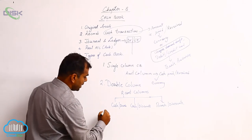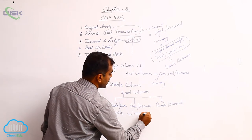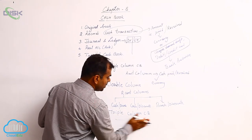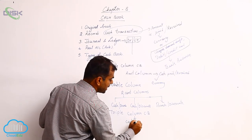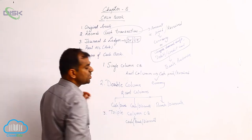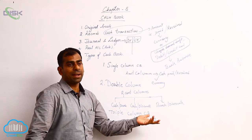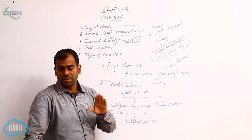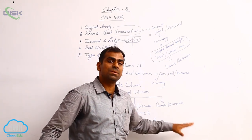The third type is a triple column cash book. In a triple column cash book, the amount columns are typically cash, bank, and discount. If you are not using currency at all, you could have another bank account column instead, giving you two bank columns and a discount column. But practically in most exam questions, you will have a triple column cash book with cash, bank, and discount columns.